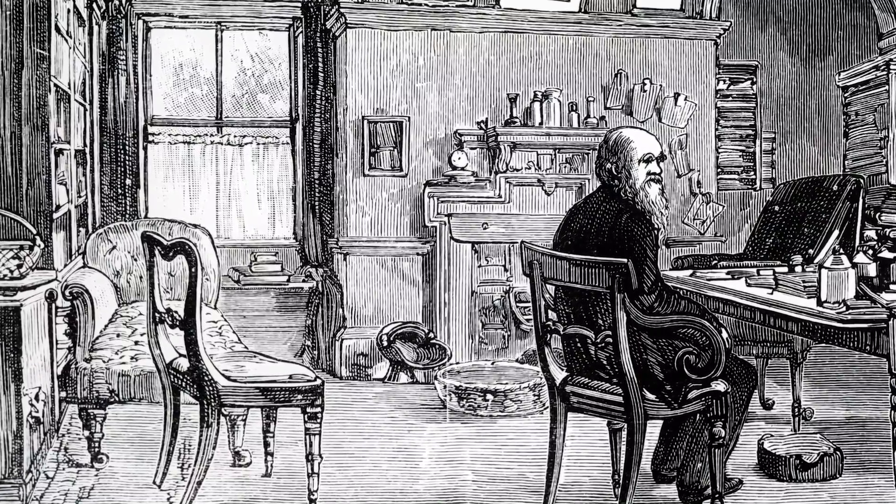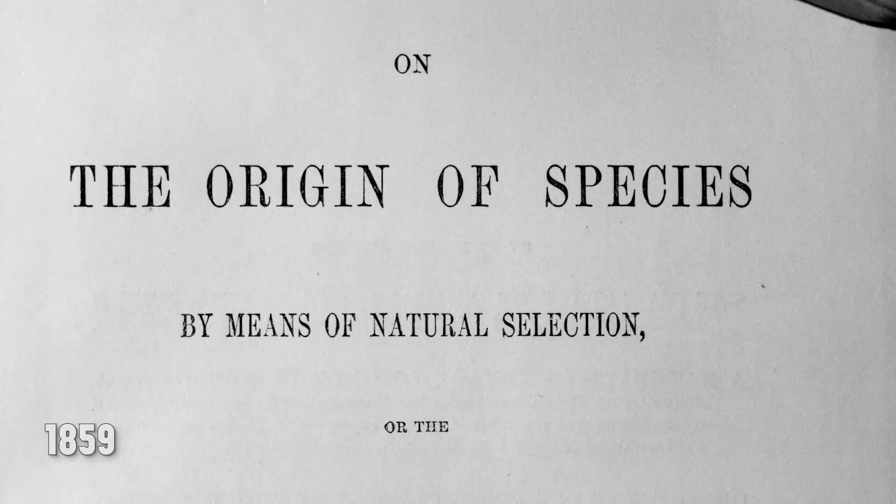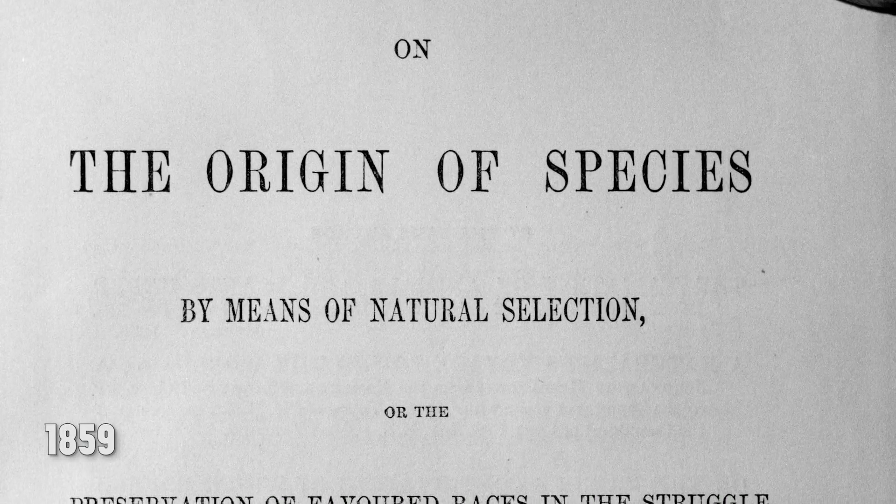Now let me tell you about Charles Darwin. He proposed the theory of evolution. It's a very important concept: natural selection. This is natural selection — I'm going to explain what natural selection means. It involves genetic characteristics and natural mutation.